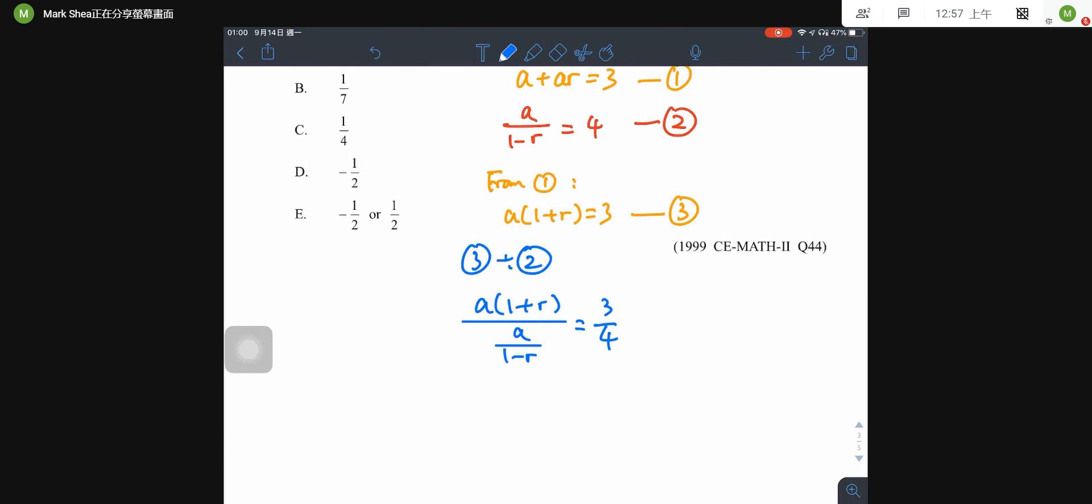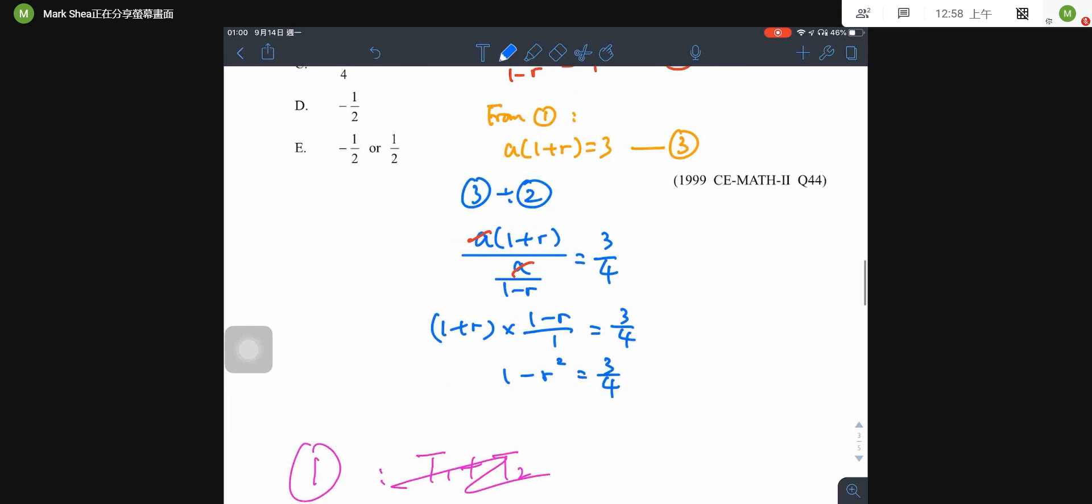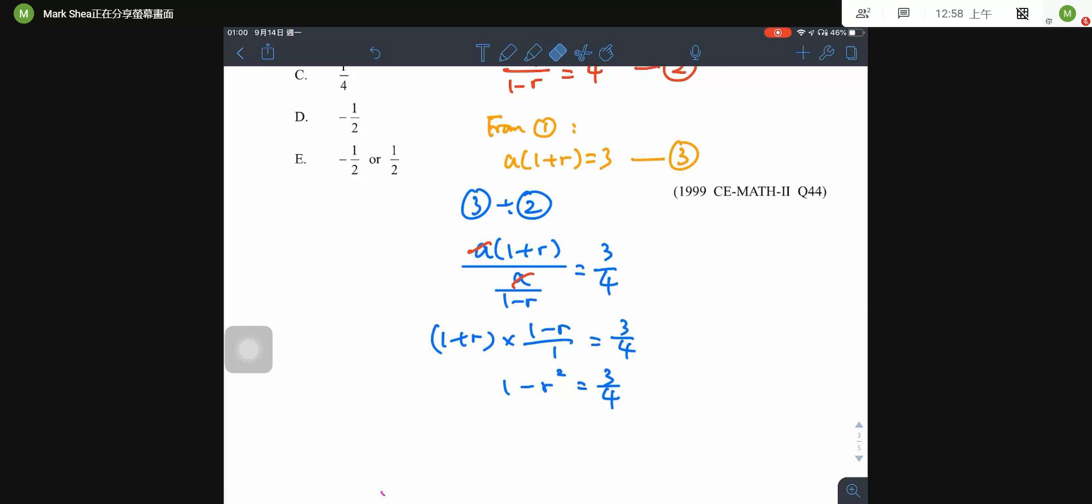Then, for the left-hand side, the a will be cancelled. And then, it will be 1 plus r times 1 minus r over 1, and it is 3 over 4. Therefore, I can have 1 minus r squared equal to 3 over 4. So, we can solve for r easily. That is, r squared is 1 over 4. And then, r is plus minus 1 over 2. So, the answer is E again. That's all for method 2.